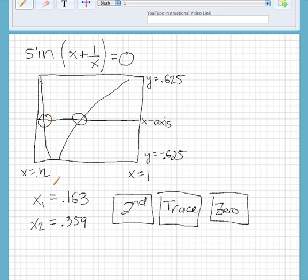And then you do the same process over—second, trace, zero—and then you get this x intercept here. The first x intercept is .163, and then the second one is .359.